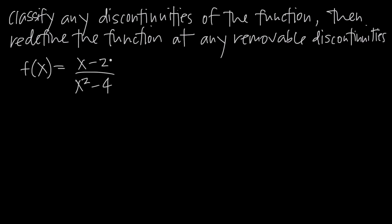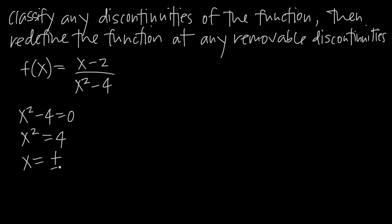Because we have a rational function — in other words, our function is a fraction with polynomials in both numerator and denominator — a rational function is only going to be undefined where the denominator is equal to 0. So if x squared minus 4 equals 0, we're going to have a discontinuity because you can't divide by 0. Solving this equation, we add 4 to both sides to get x squared equals 4, and taking the square root gives x equals positive or negative 2.